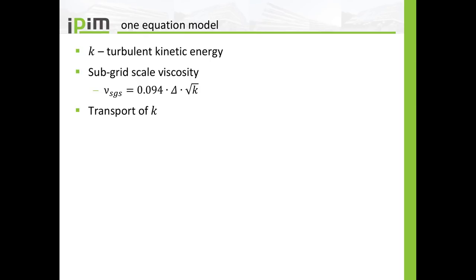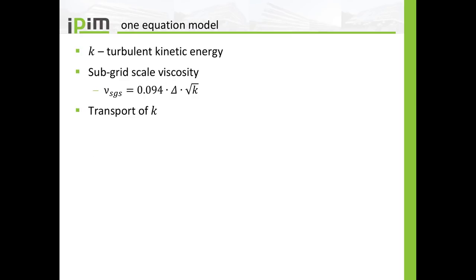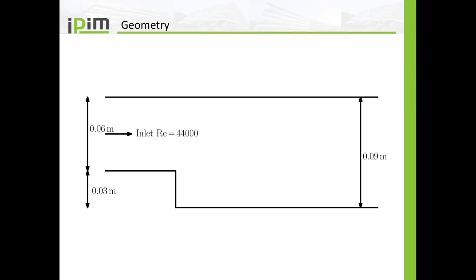In the one-equation model, called one-equation eddy in OpenFOAM, you have this K value but in this case you have a transport equation for K, with a convection term, a diffusion term, source terms, and a partial time derivative. So in the Smagorinsky-Lily model you don't have to specify a K value in the zero folder for the initial values and boundary conditions, but in the one-equation eddy model we will have to set a K value.